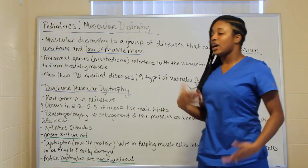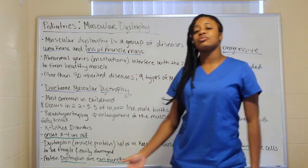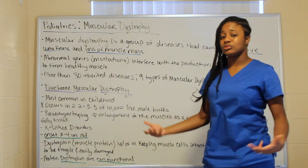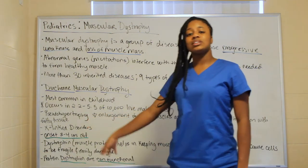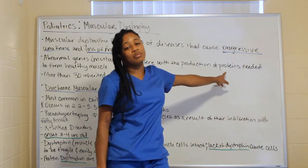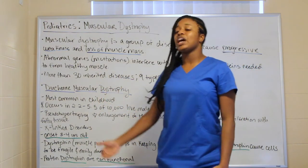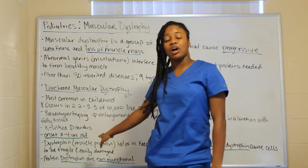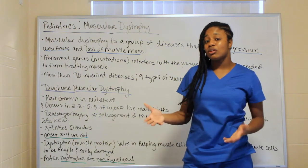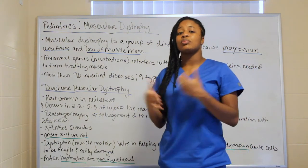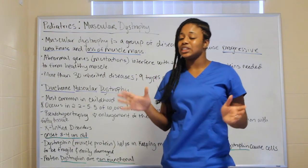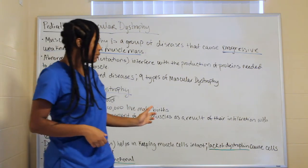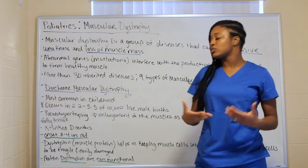The onset of Duchenne is from three to four years old — very young, which is why it's called most common in childhood. One key protein involved is dystrophin, which helps keep the muscle cells intact. A lack of dystrophin causes muscles to be very fragile and easily damaged.